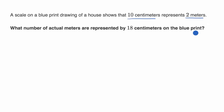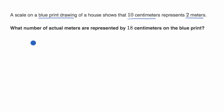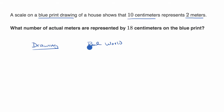Pause this video and see if you can figure it out. The main thing to realize is that a blueprint drawing is a scale drawing of something in the real world — in this case, of a house. What we could do is set up a little table here, with the drawing on the left and the real world on the right.